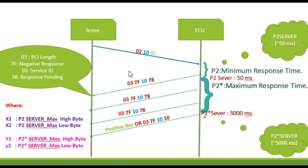Here you can see the tester sends a request. The server tried to process it within 50 milliseconds — not possible — so the tester got NRC 78. Again the P2 timer is extended to P2 star server 5000 milliseconds. The ECU tries to process it, but at attempts 8.1, 8.2, and 8.3 the server couldn't process it — again the tester got NRC 78. In the final attempt, the server time is extended to 5000 milliseconds.